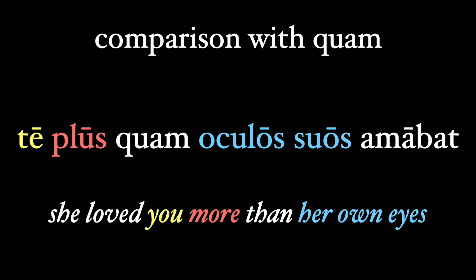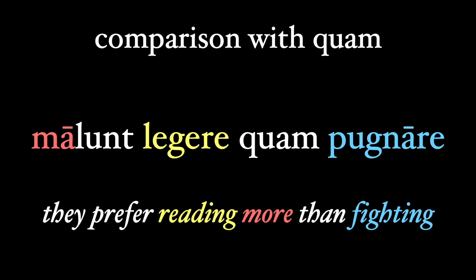She loved you more than her own eyes: te plus quam oculos suos amabat. They prefer reading more than fighting: malunt legere quam pugnare. Here the verb malunt carries with it the idea of 'more' — magis — with the mal- prefix, and we're comparing the two infinitives, legere and pugnare.